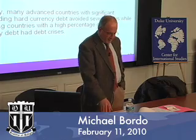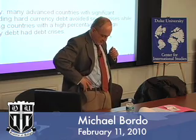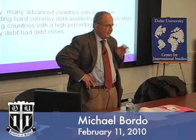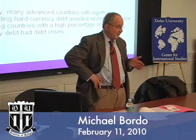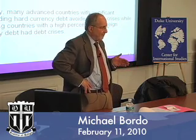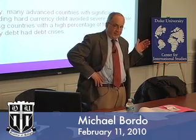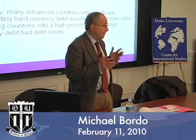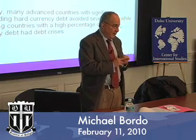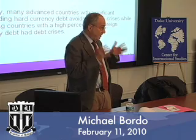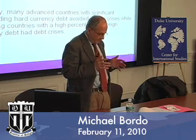In some earlier work, we showed that before 1914 some countries with very heavy foreign currency exposure didn't have severe financial instability, nor did they have debt defaults, while others that had intermediate levels of hard currency exposure did have frequent and severe financial crises. We found that the Scandinavian countries and the British Dominions didn't have financial crises or debt crises, whereas countries like Italy, Argentina, Brazil, Russia, et cetera, which did have local currency debt, did have significant financial crises.